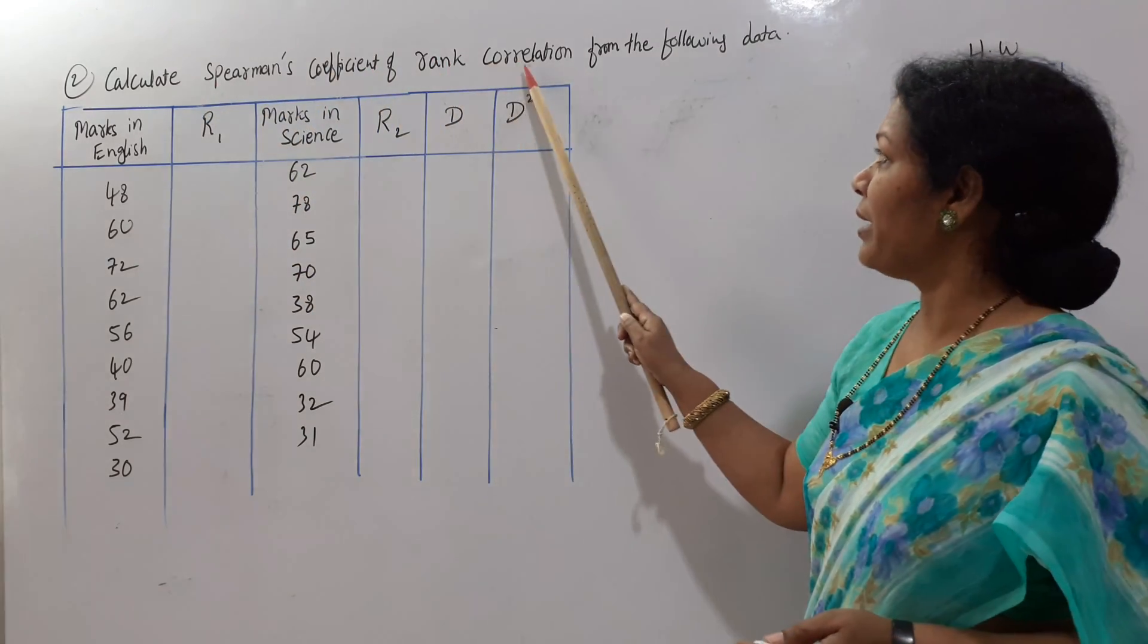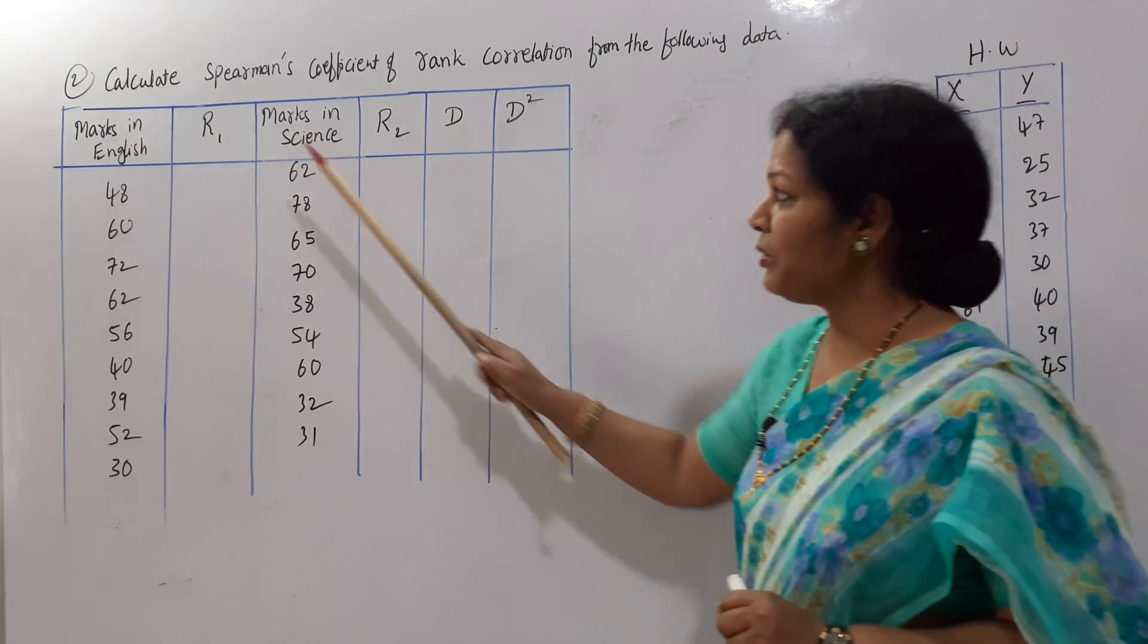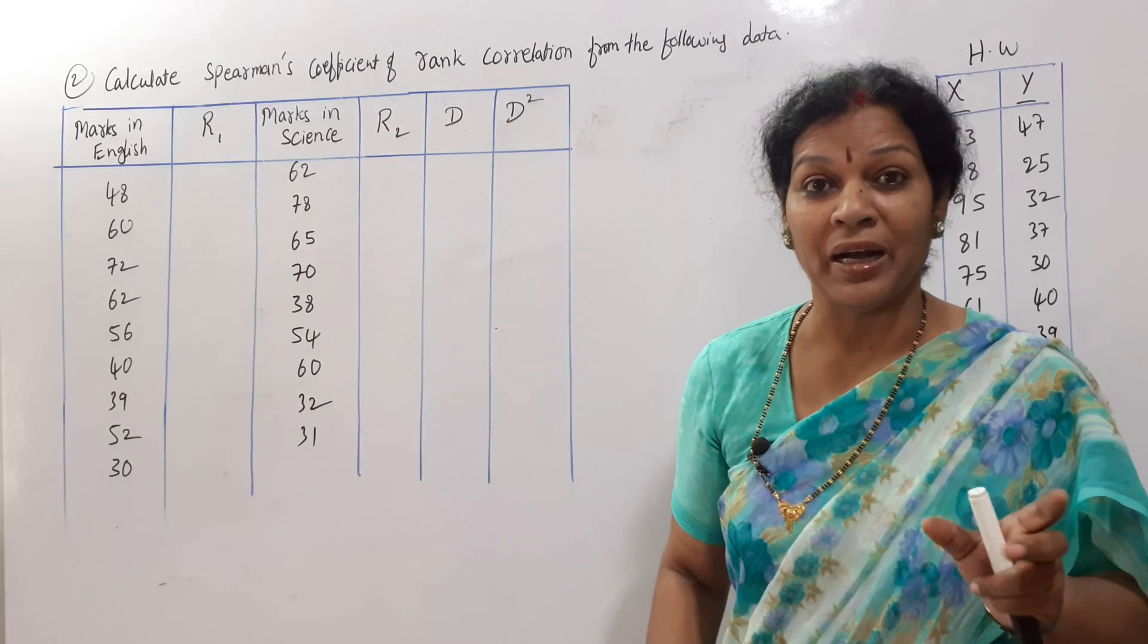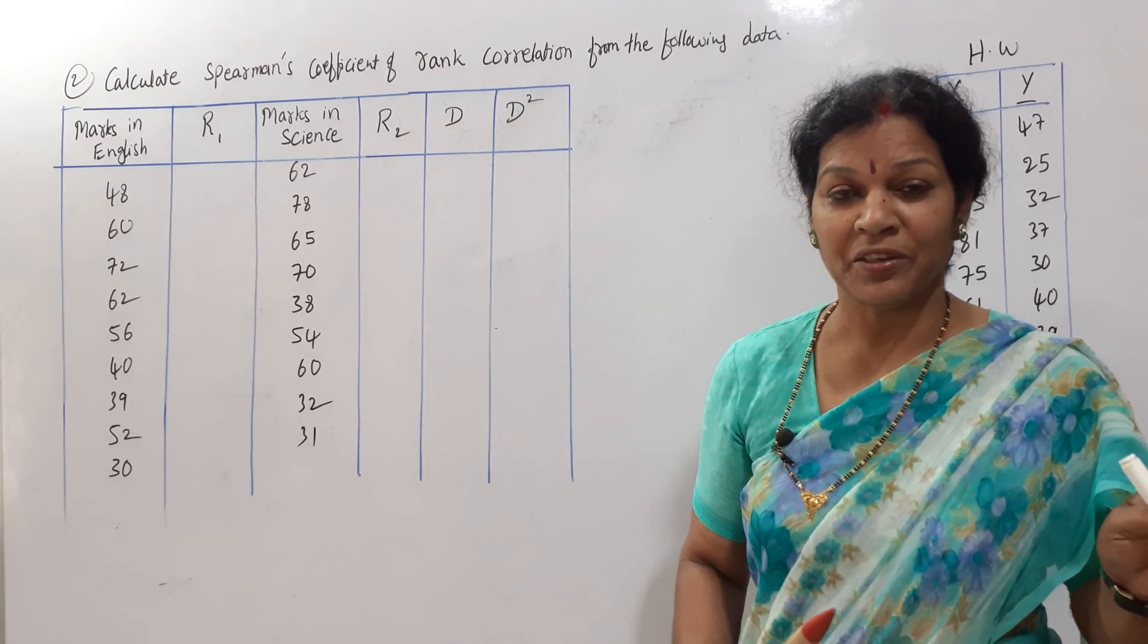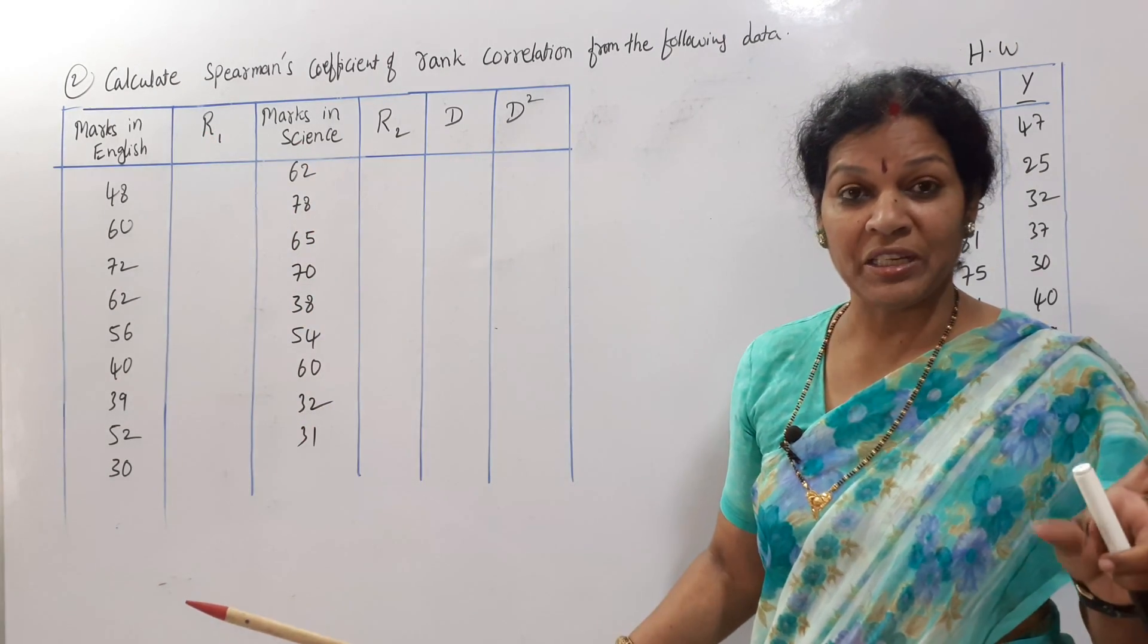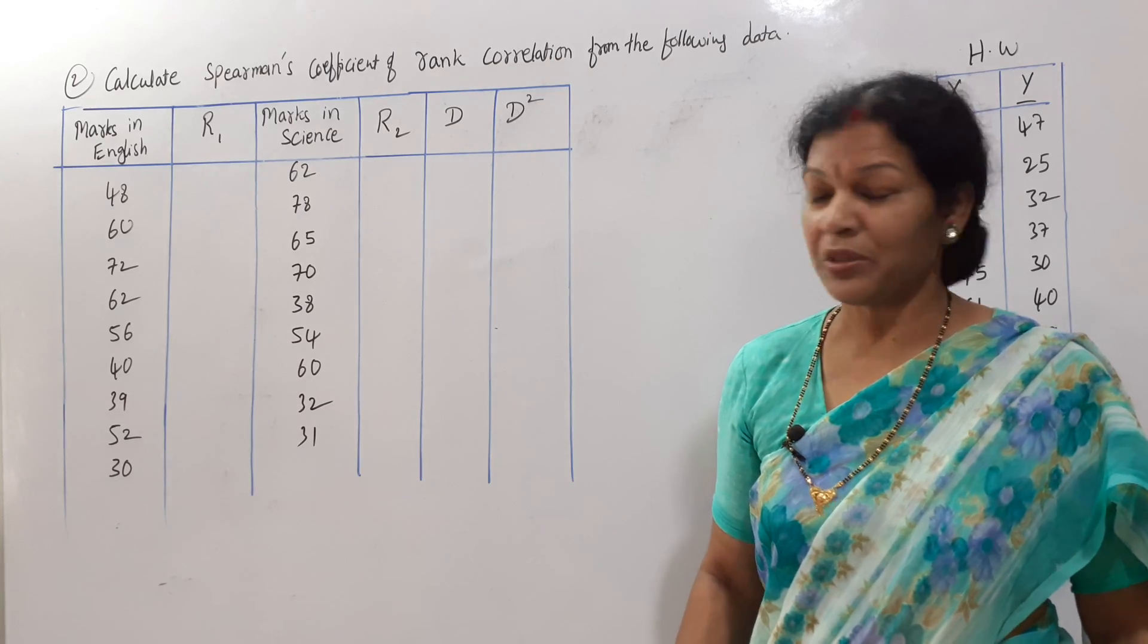Calculate Spearman's coefficient of rank correlation from the following data. So this we have to calculate. What is given to us? Marks in English subject, marks in Science subject. Marks are given, not ranks. Please be careful. Marks are given direct. Ranks are not given. It means we have to give the rank.